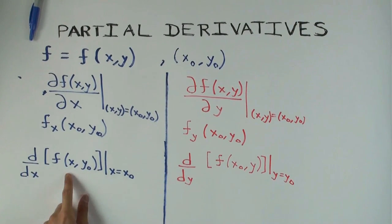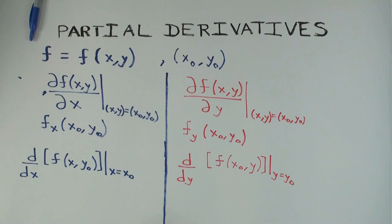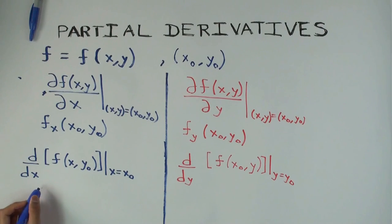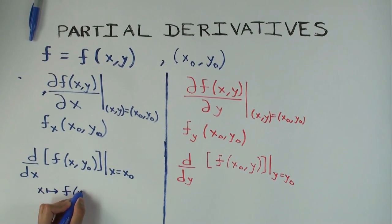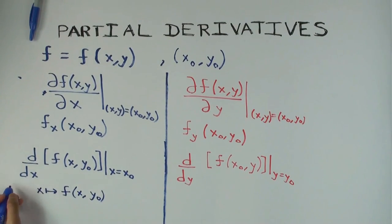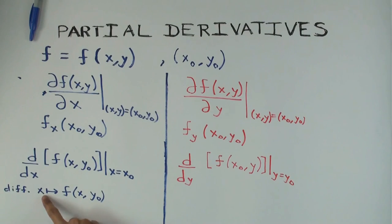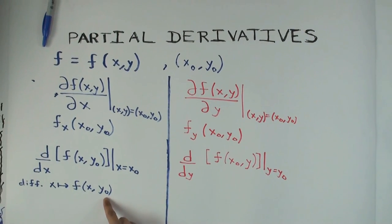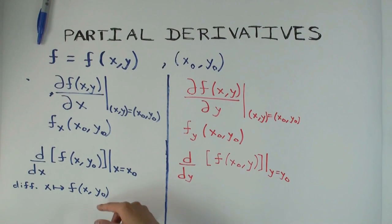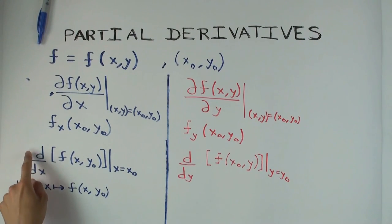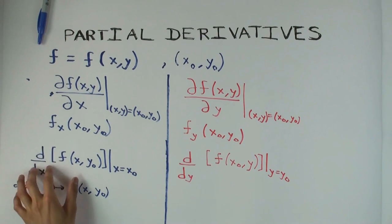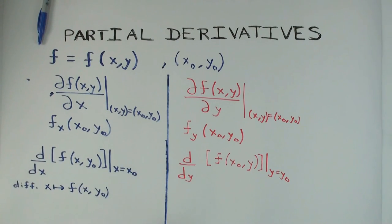What does this mean? This means you are differentiating with respect to x the function which sends x to f of x comma y-naught. Now y-naught is an actual number, so this is just a function of one variable. We are differentiating the function with only one variable input x, treating the other variable y as a constant with value y-naught. Since this is now a function of one variable, it makes sense to differentiate it with respect to that variable and then evaluate the derivative at a particular point. That is exactly what we do to get the definition here.